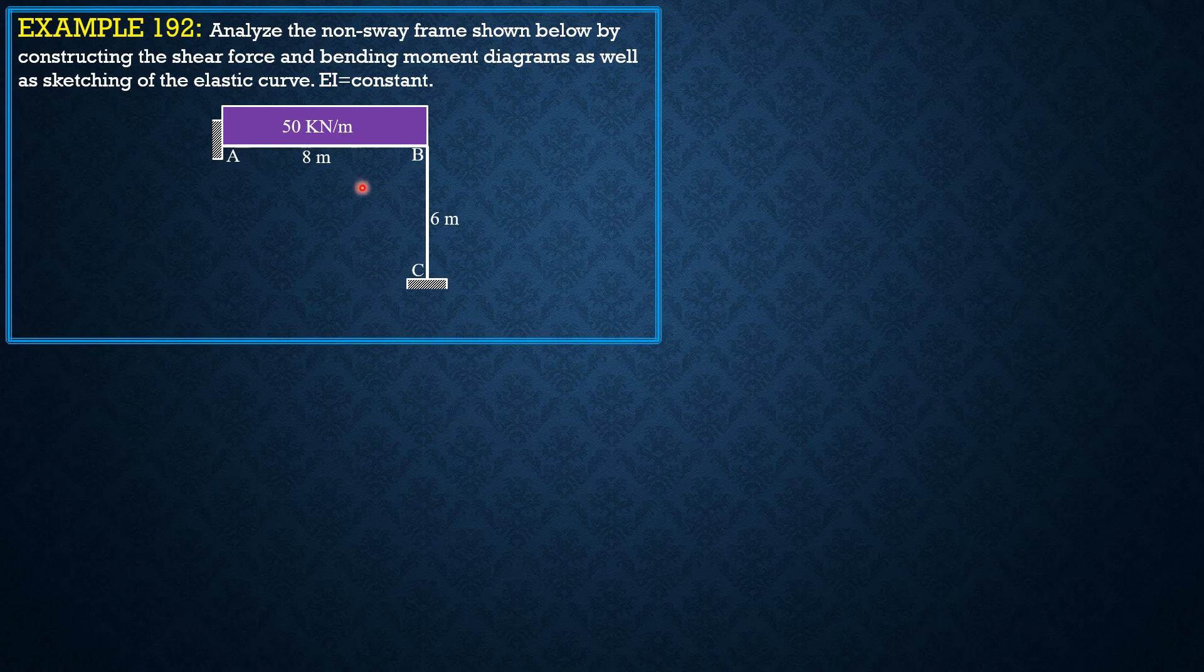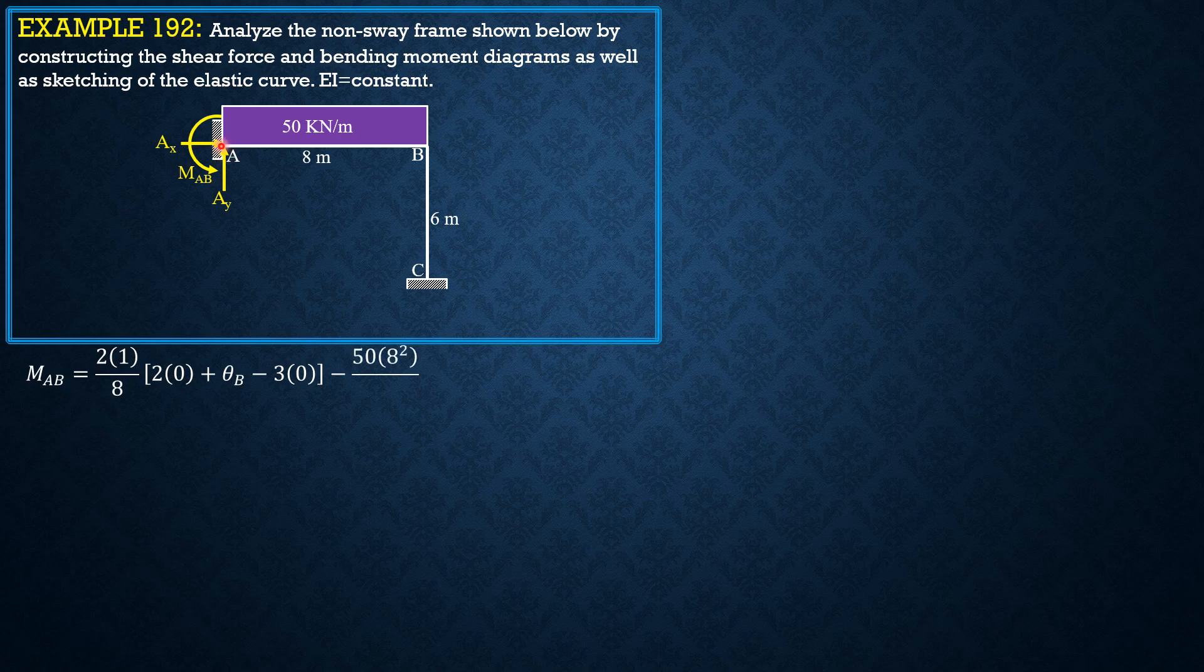Let's call the reactions at A. MAB is equal to 2 times 1 over L, which is 8, times 2θA (which is 0 because this is fixed) plus θB, then minus 3 times delta over L. Since there is no side sway for this horizontal segment of the frame, delta is 0.